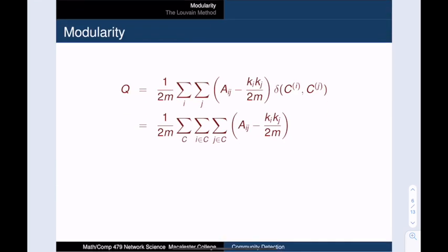Here is our modularity formula again. My goal on this slide is to get you to understand what this summand actually means. But first, I want to rewrite this equation into a formula that I like a little bit better. So here I am using a triple sum instead of using the Kronecker delta function. And in order to calculate modularity, I pick a community C, and then I pick a vertex i in that community, and then I pick another vertex j, and now I calculate this difference, A_ij minus k_i times k_j over 2m.